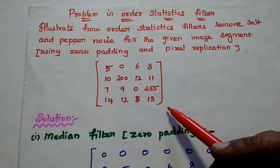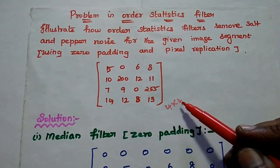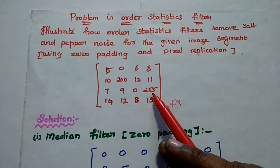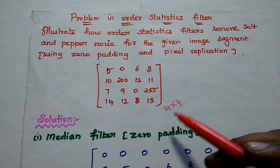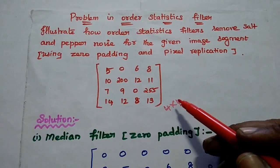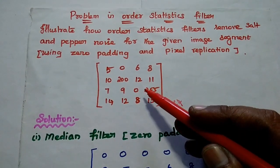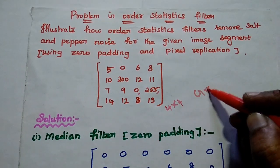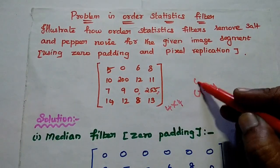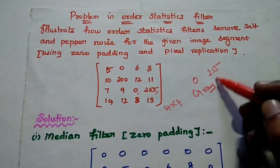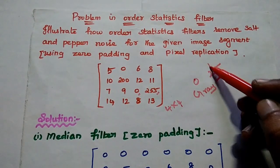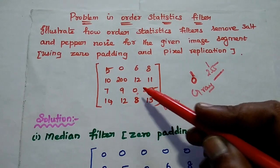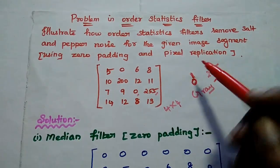In this problem they have given us a 4x4 image segment: 5, 0, 6, 8, 10, 200, 12, 11, 7, 9, 0, 255, 14, 12, 8, 13. Here they have given us salt and pepper noise. In this image segment we can have two extremes — 0 and 255. In this gray level image, 0 represents black and 255 represents white color. That is salt and pepper noise. We are going to remove this salt and pepper noise using order statistics filters.